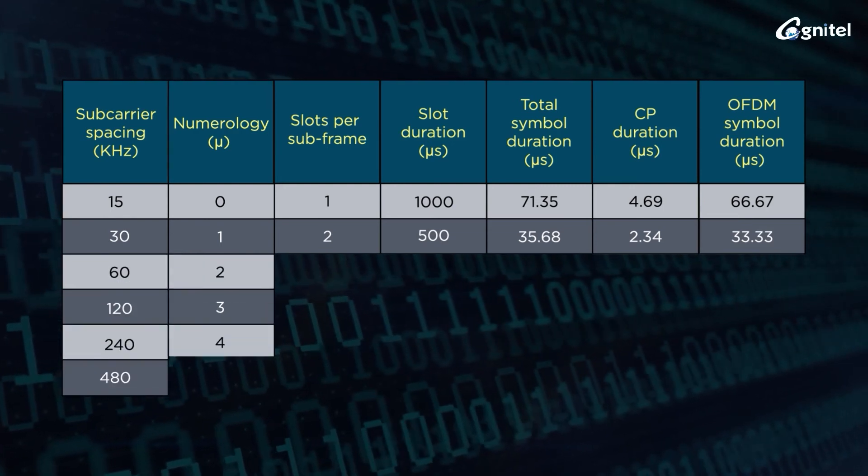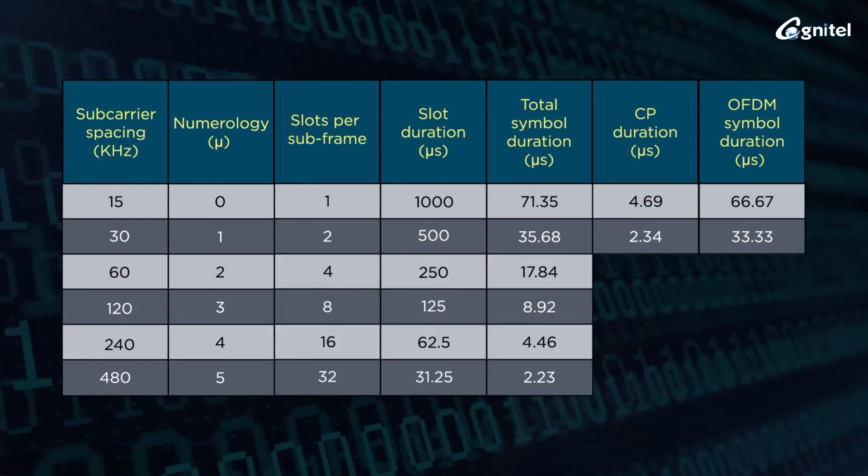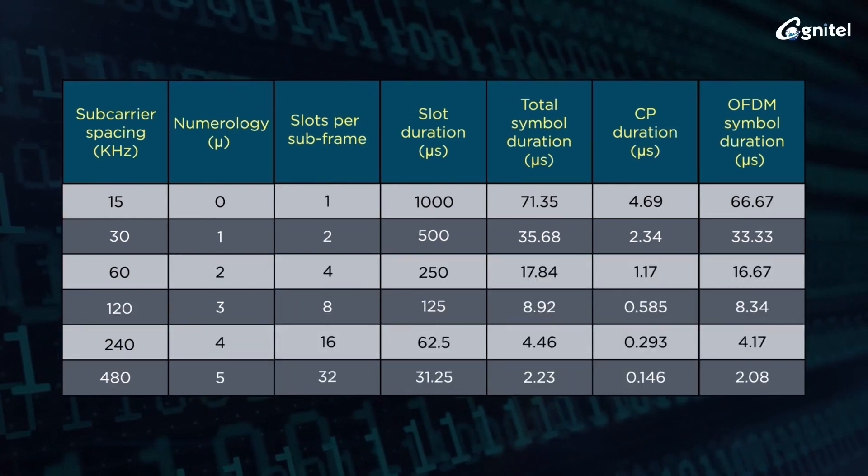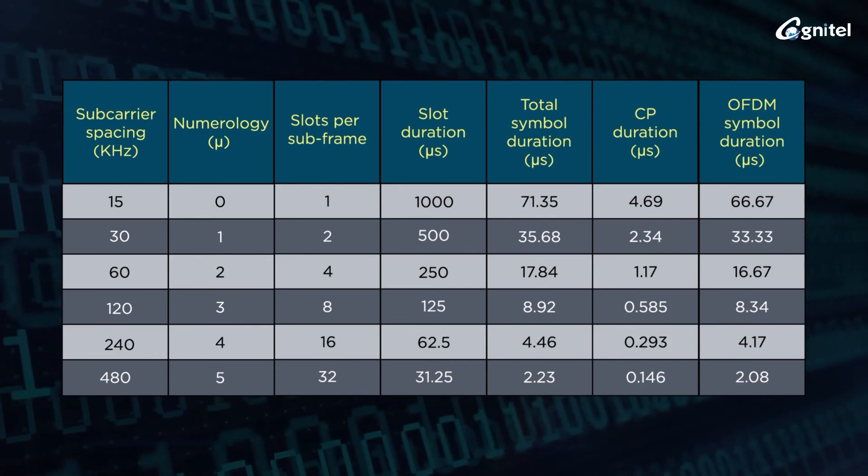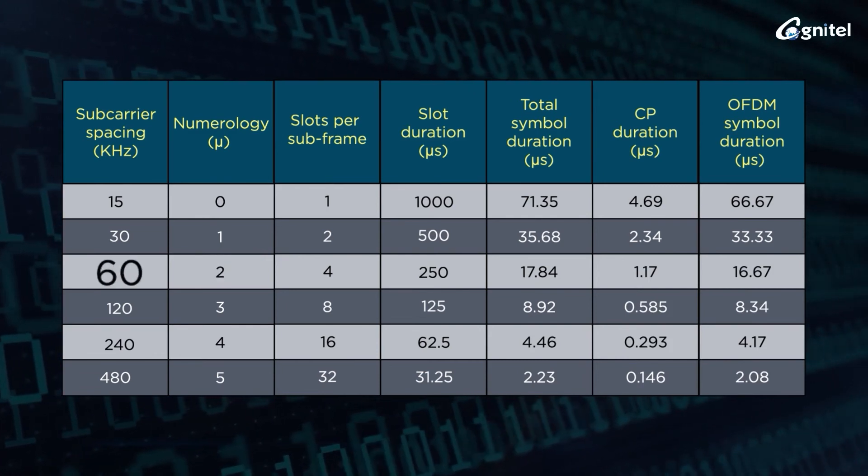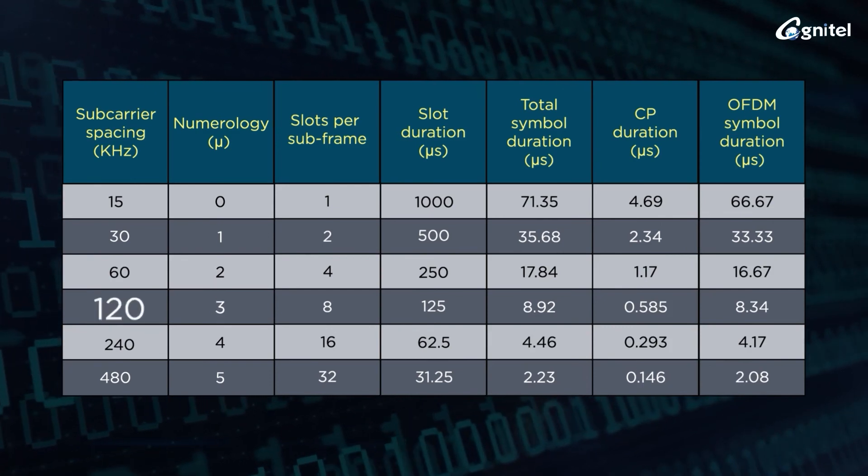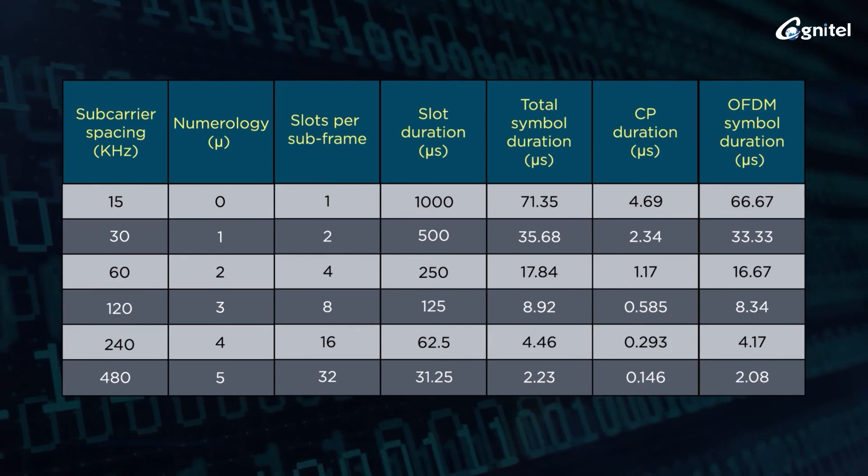The table further shows the mathematically calculated numerology values of other subcarrier spacings, like numerology 2 for 60 kilohertz subcarrier spacing, 3 for 120 kilohertz, and so on.